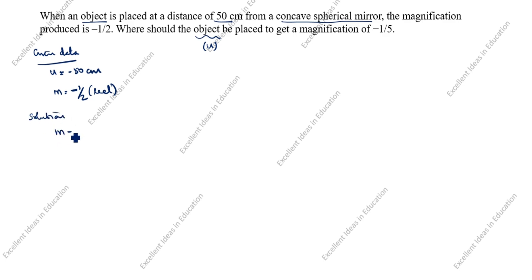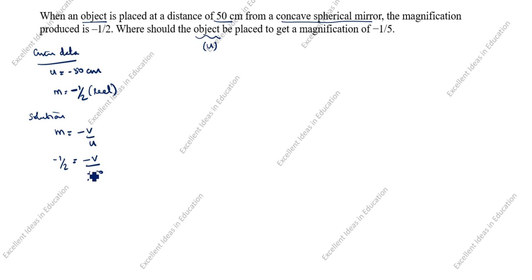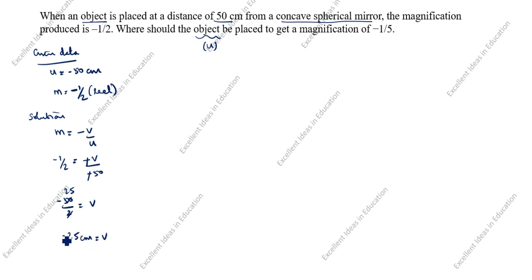The formula is m is equal to minus v by u. m is minus 1 by 2, v value we do not know, and u value we know is minus 50. The minus and minus cancel, so minus 50 by 2 equals v. Simplifying, v is equal to minus 25 centimeters.